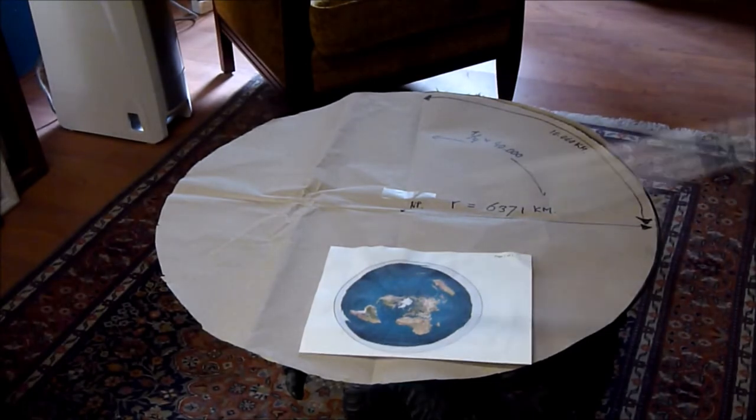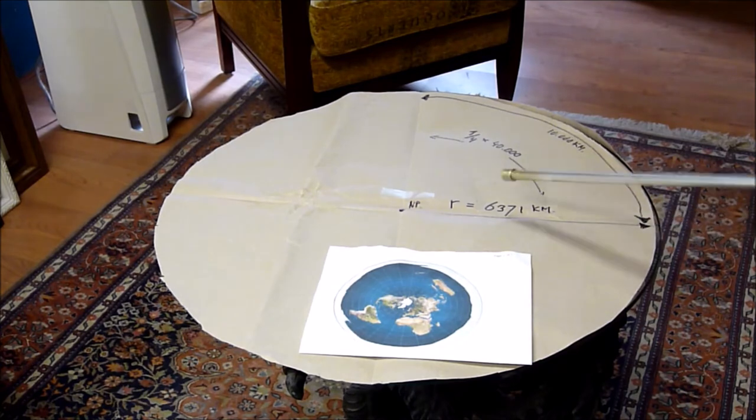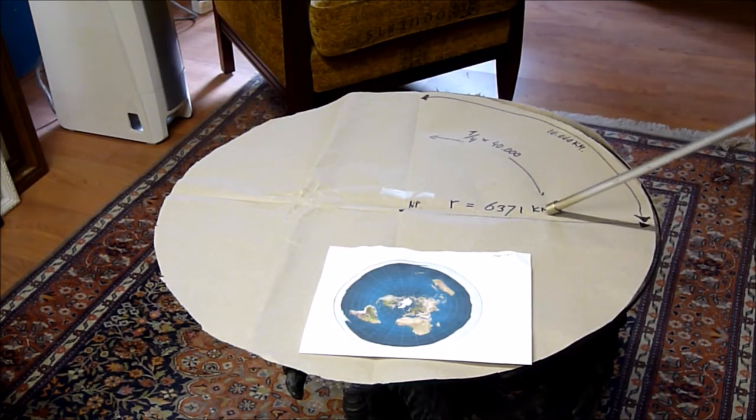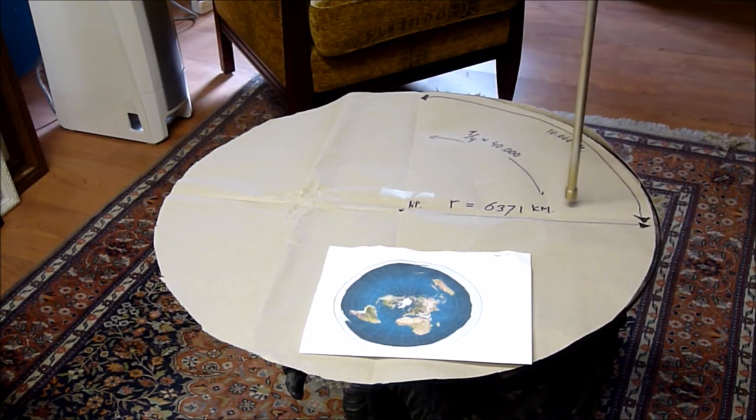En zo geschiedde, men is aan het meten gegaan en uiteindelijk is de meter dus gedefinieerd als het 1 10 miljoenste deel van de Noordpool tot aan de evenaar. En nu heb ik een probleem, want als de aarde plat is, dan is de afstand Noordpool evenaar 6300 kilometer. En dat weten we nou, dat kan niet, want die kilometer, die meter daar, die is nou net afgesproken als het 10 miljoenste deel.